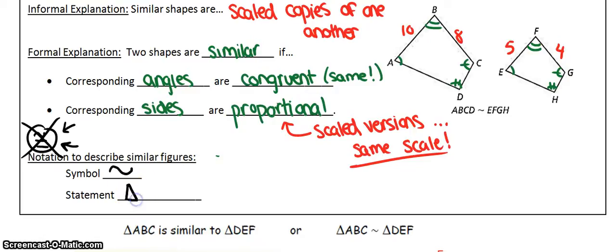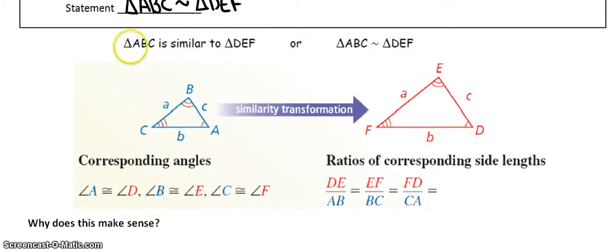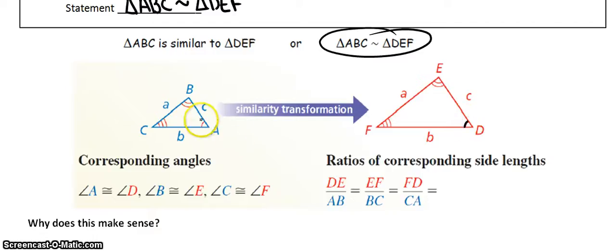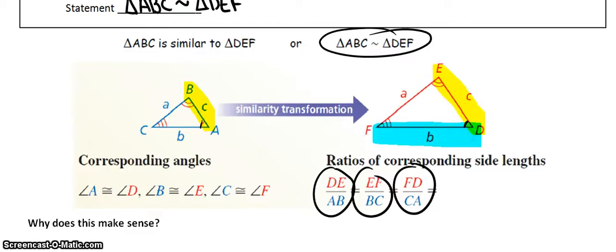An example of a similarity statement would be: triangle ABC is similar to triangle DEF. If you see the similarity symbol, you know they're similar. So if ABC is similar to DEF, angle A is congruent to angle D, but the sides are not equal. This side is not the same length, but the ratios of all the sides should be equal — because the ratios really calculate the scale factor. So DE divided by AB should equal DF divided by AC, because they have the same scale factor.